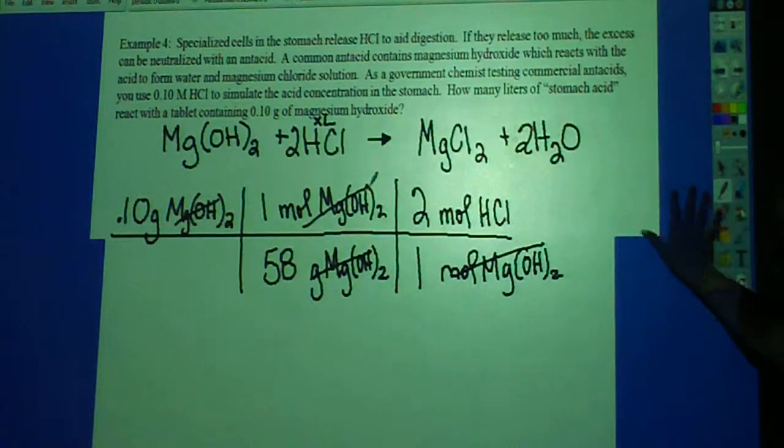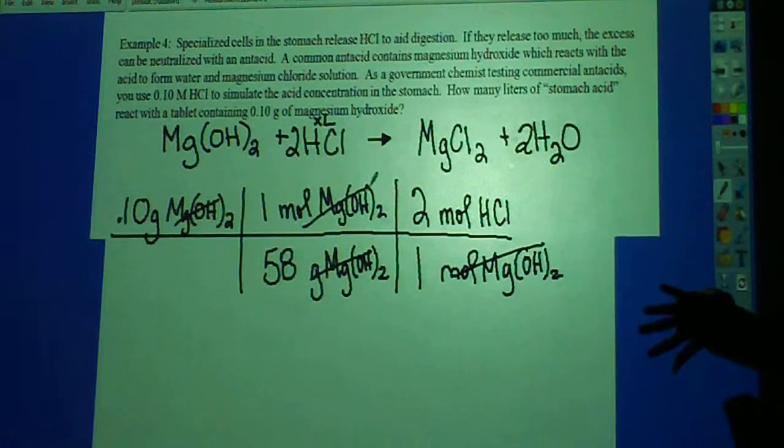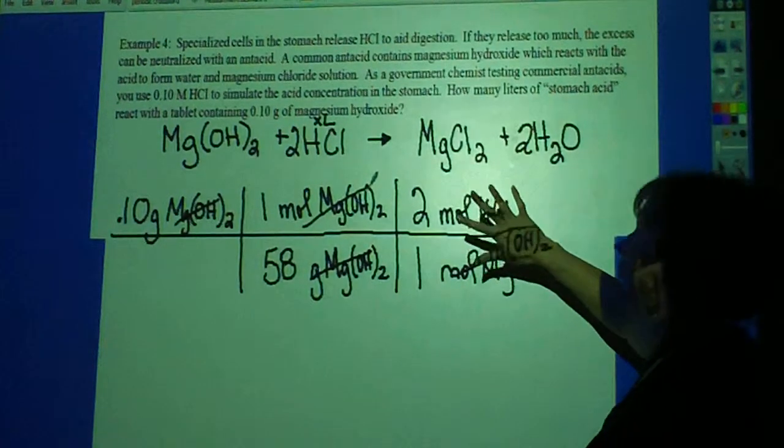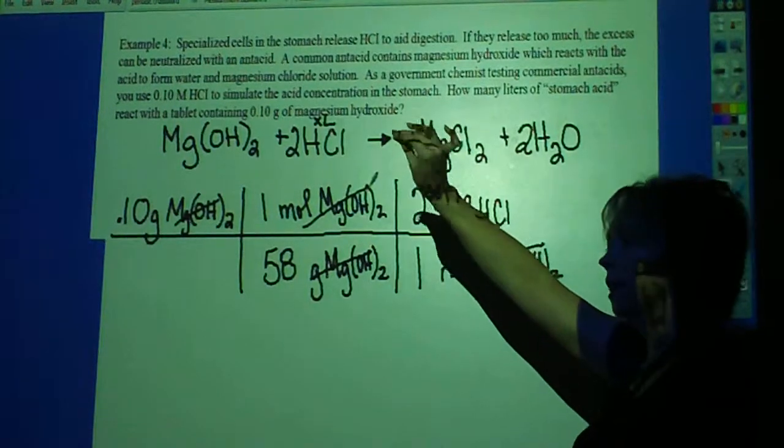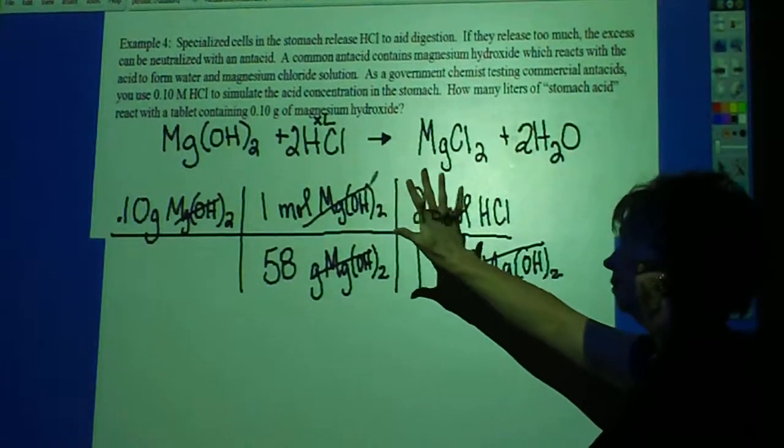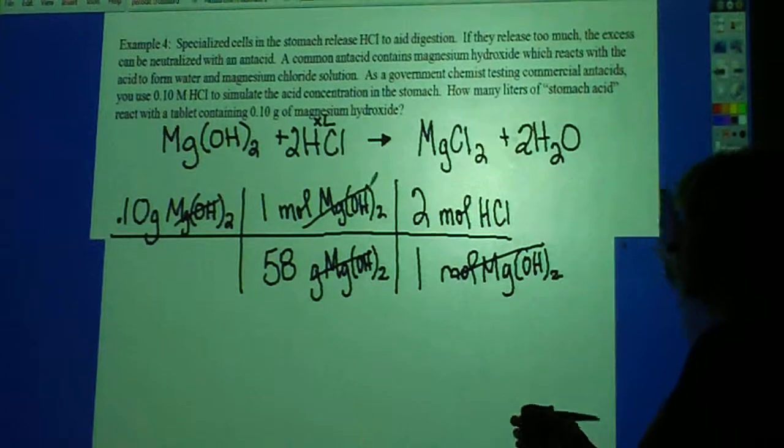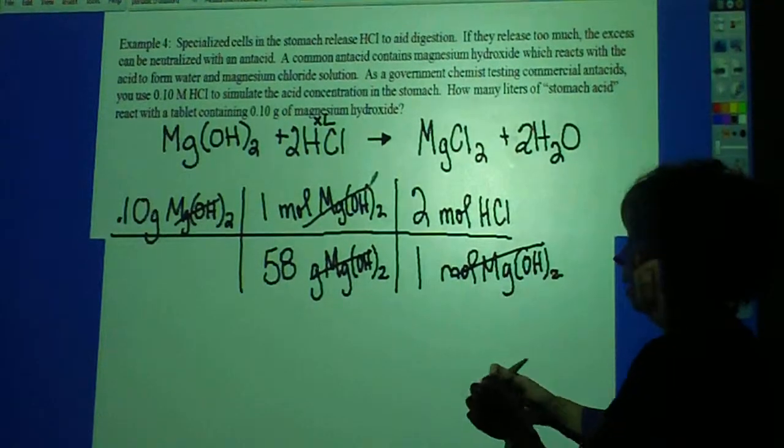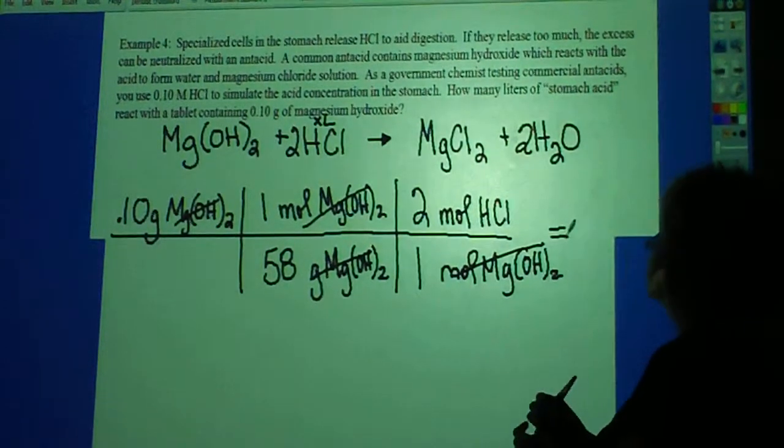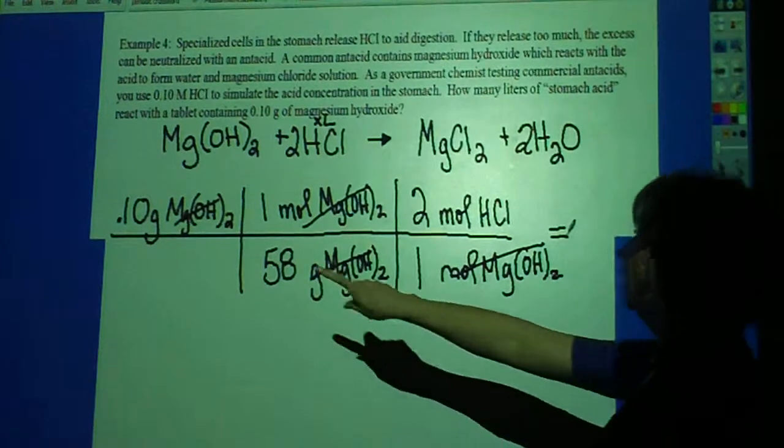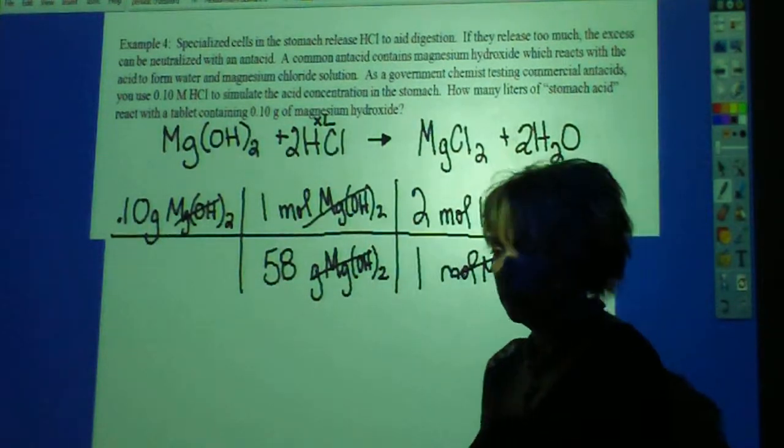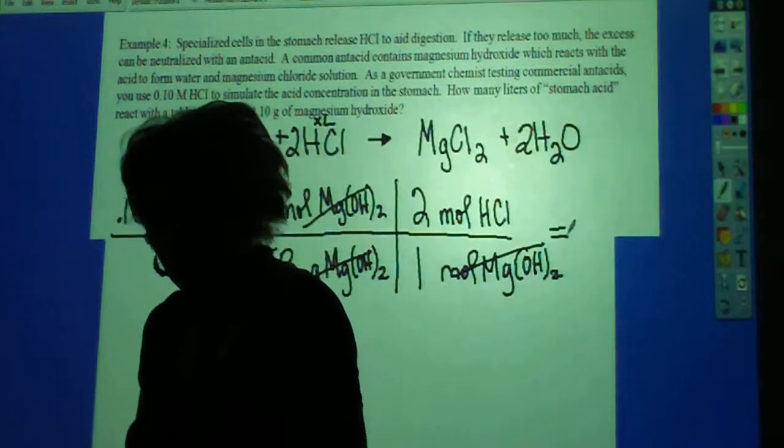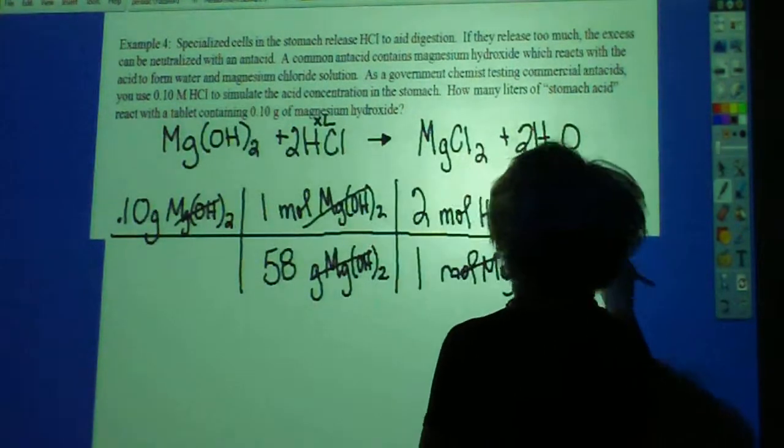Now I'm given a molarity here. I can go ahead and calculate this out to grams, but molarity, remember, I'm dealing with moles and liters. So I probably just want to stop here and leave this value in moles so that it fits nicely in my molarity calculation. I can convert it to grams, but then I'm going to have to convert it right back to moles. So I'm going to stop and solve here. So I have 0.1 grams divided by 58 times 2, which is 0.0034.